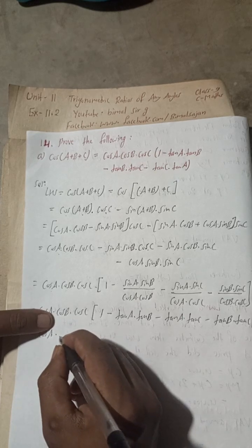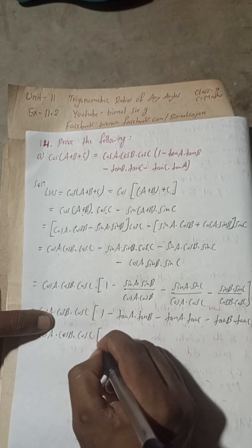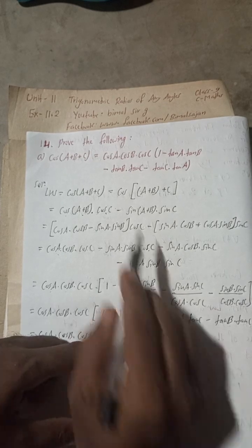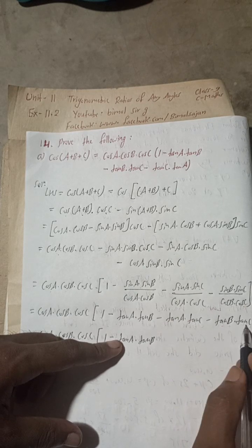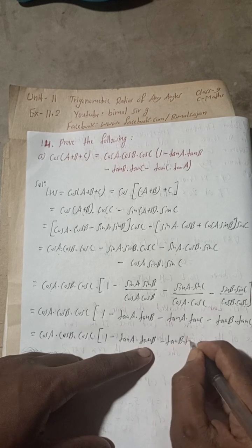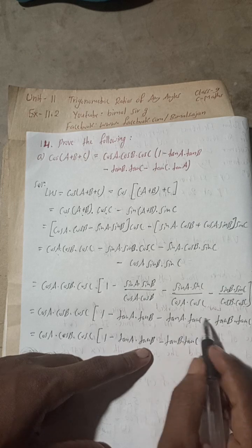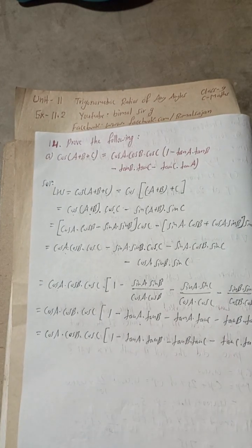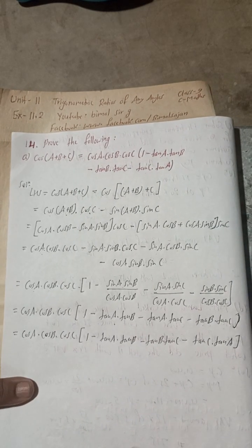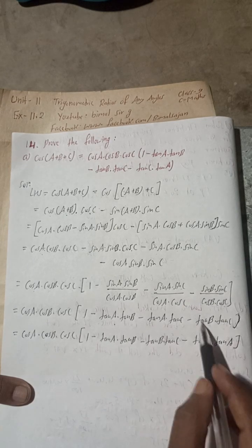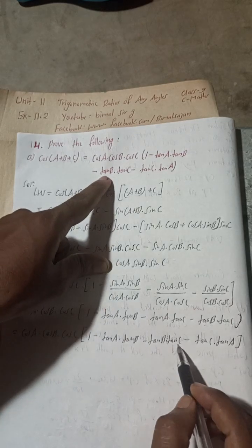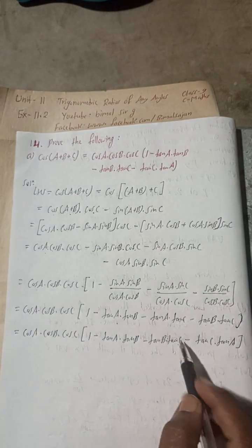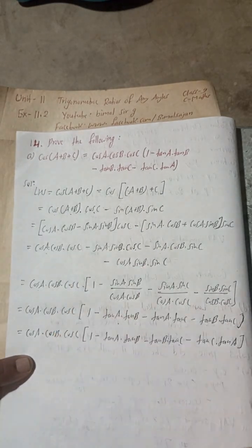Rearranging to match the required formula: cosA·cosB·cosC · (1 − tanA·tanB − tanB·tanC − tanC·tanA). This matches the RHS exactly. Hence LHS = RHS, proved.